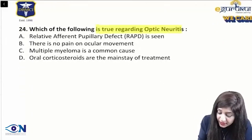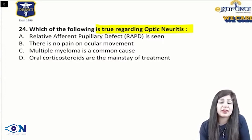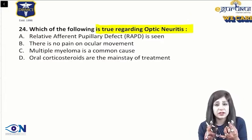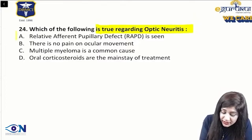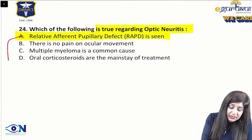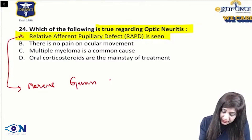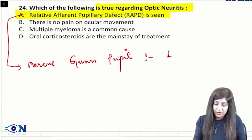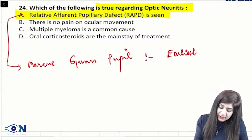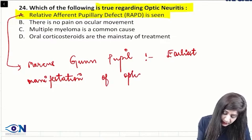Now let's see the next question: what is true regarding optic neuritis? This question included options covering causes, symptoms, signs, and treatment. The first option is the correct one — RAPD, also called the Marcus Gunn pupil, is the earliest manifestation of optic nerve diseases.